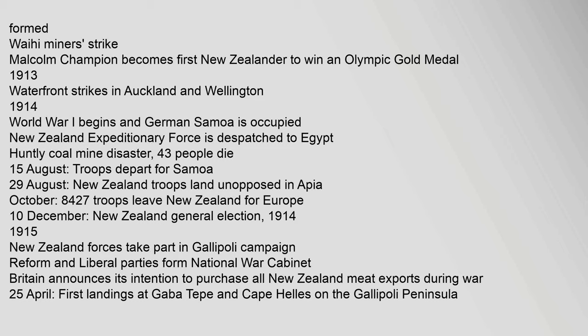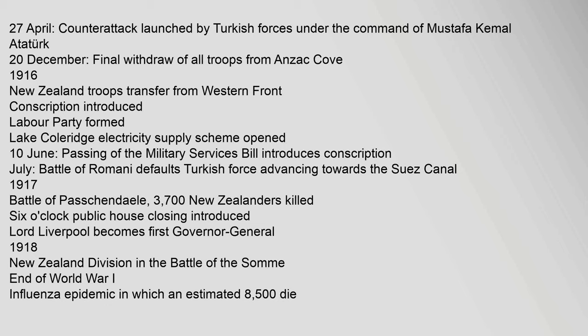25 April: First landings at Gaba Tepe and Cape Helles on the Gallipoli Peninsula. 27 April: Counterattack launched by Turkish forces under the command of Mustafa Kemal Atatürk. 20 December: Final withdrawal of all troops from Anzac Cove. 1916: New Zealand troops transfer to the Western Front. Conscription introduced. Labour Party formed. Lake Coleridge Electricity Supply Scheme opened. 10 June: Passing of the Military Services Bill introduces conscription.